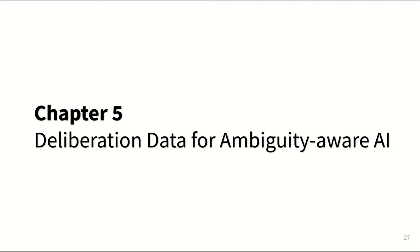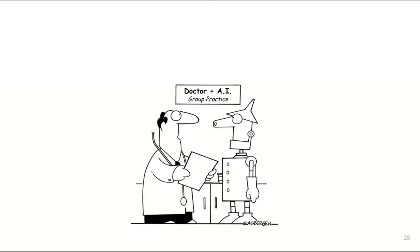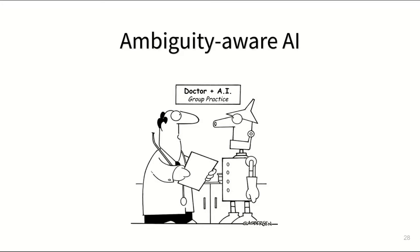That is, to explore AI systems that can help humans handle ambiguity in decision making. Which brings us to Chapter 5, where we explore the question of how we can leverage deliberation data to explore AI systems that communicate ambiguity in their output. However, this kind of AI concept doesn't really exist yet. We called it ambiguity-aware AI.